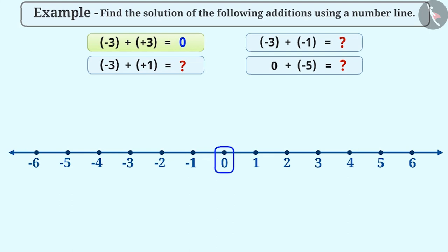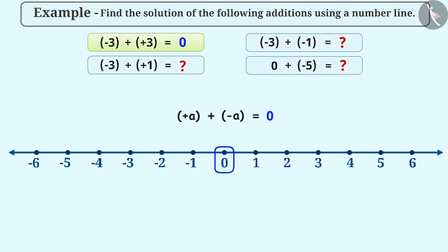Numbers such as plus a and minus a, when added to each other, give the sum 0. Therefore, numbers whose sum is 0 are called the additive inverse of each other.